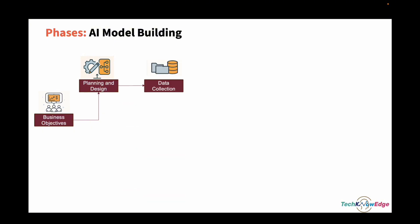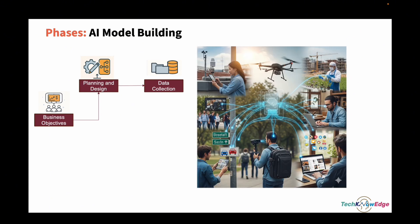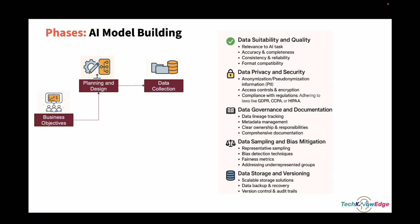Next is data collection. Once the objective is clear, you move to gathering the right data. If you are working on fraud detection, you will need customer profiles, transaction data, and behavioral history. In healthcare, for predicting hospital readmissions, you might need medication history, vitals, and lab results. The data you collect will vary by domain — banking, e-commerce, telecom — and even within those domains, sources and structure differ. Always keep in mind: data suitability and quality, data privacy and security, data governance and documentation, data sampling and bias mitigation, and data storage and versioning.